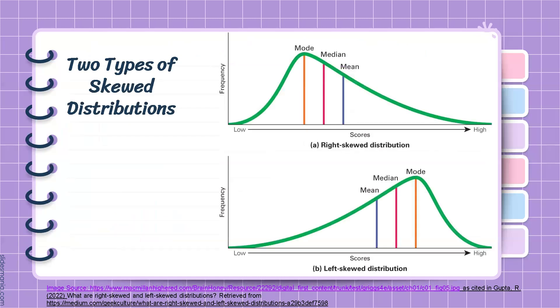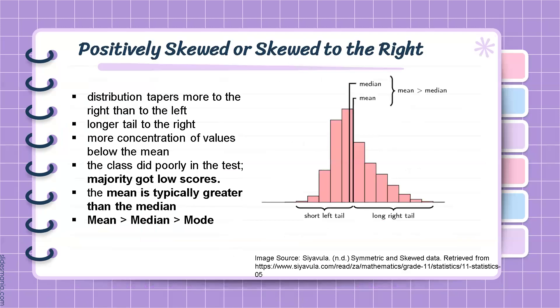There are two types of skewed distributions. The first one is positively skewed distribution, or commonly known as skewed to the right. The distribution tapers more to the right than to the left. It has a longer tail to the right, and more distribution of values are found below the mean. Considering the class scores, we can say that the class did poorly in the test because majority got low scores in this distribution. The mean is typically greater than the median and the mode.